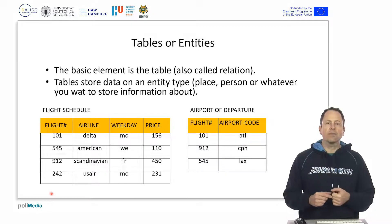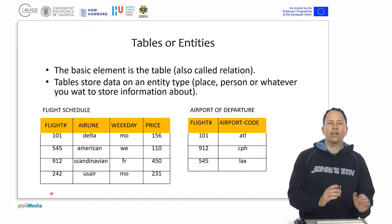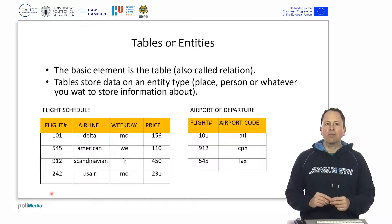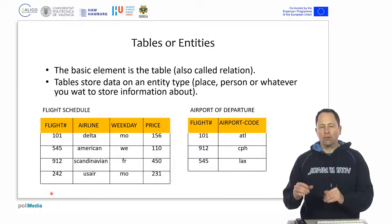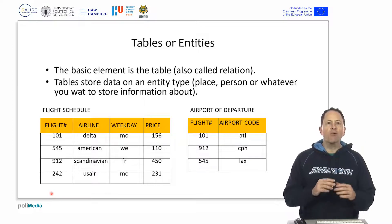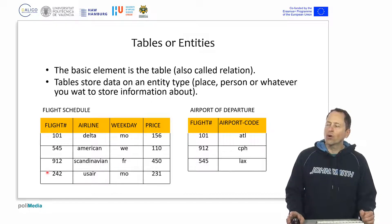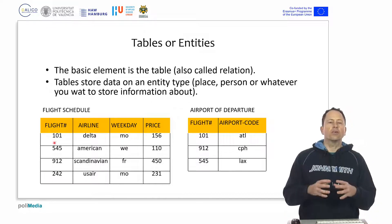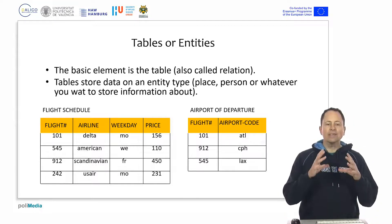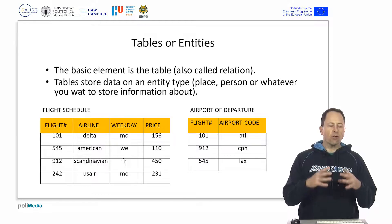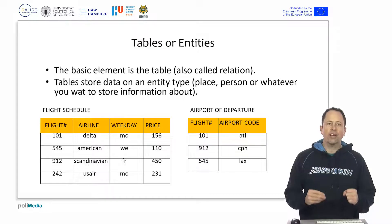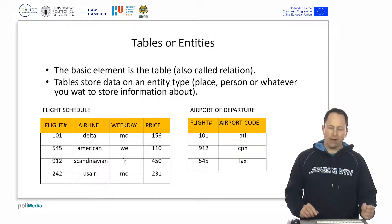Any information that we can think of, we can store it in a table. We can have another table for employees or for students. In this case, we have one for departure airports relative to a flight number. Whenever we want to save data about an entity, about something specific, we will create a table.